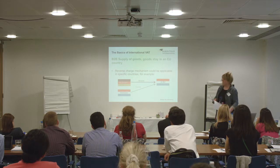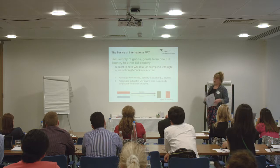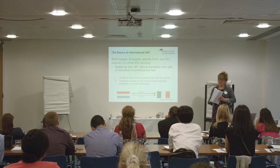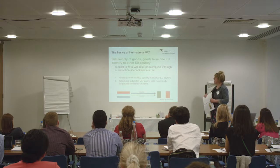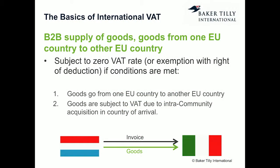Now an important case that often goes wrong: a B2B supply where goods travel from one EU country to another EU country. The supply is subject to 0% VAT — an exemption with the right of deduction — but only if certain conditions are met. The goods must physically go from one EU country to another, and they must be subject to an intra-community acquisition (reported with VAT) in the country of arrival.